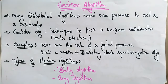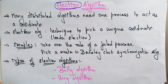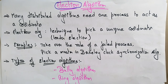Welcome back. The next topic in distributed systems is the election algorithm. Just like in real life where we elect a leader, in distributed systems we also need to elect a coordinator. So whenever you want to select a particular processor in the network as a coordinator, you keep an election — that is how the election algorithm works. In this video I'll explain what the election algorithm is and the types of election algorithms.